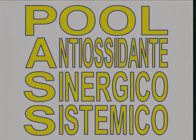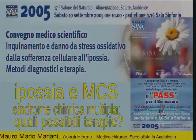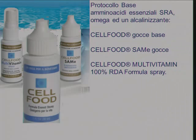You have a damaged cell, the EDTA comes, restructures the cell, and Cell Food oxygenates and repairs again. This response nourishes, detoxifies and heals cells. We know that Cell Food reduces oxidative stress. The vision I had in 2004 — I can now shout it: Cell Food is an antioxidating synergic systemic pool. We have an entire range of literature on Cell Food and the experience of many patients who use it. In 2005 we spoke of MCS and possible treatments.